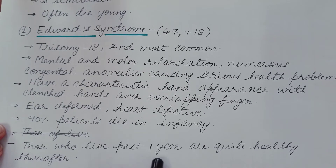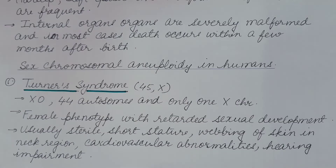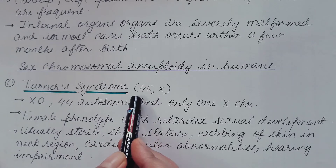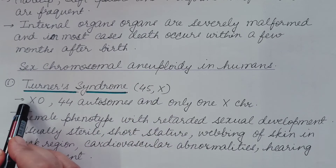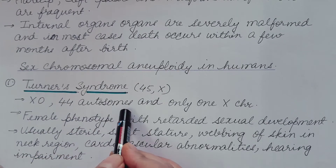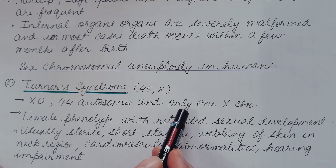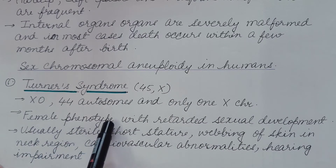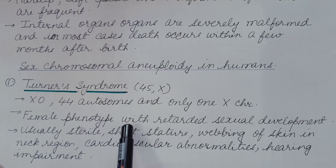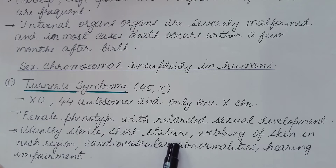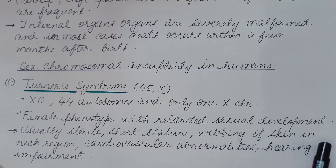Those who live past one year are quite healthy thereafter. We have so far discussed autosomal aneuploidy; now we will discuss sex chromosomal aneuploidy in humans. First is Turner's syndrome, represented as 45,X or X0. Here 44 autosomes are present, but instead of two sex chromosomes only one sex chromosome is present — the X chromosome. These individuals have a female phenotype with retarded sexual development, are usually sterile, have short stature, and show webbing of skin in the neck region.